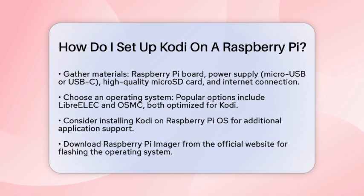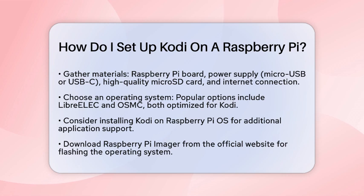First, gather your materials. You will need a Raspberry Pi board, a micro USB power supply that can provide up to 2500 milliamps, or for the Raspberry Pi 4, a 15-watt USB-C power supply. You will also need a high-quality microSD card with enough storage to hold the operating system and Kodi. Lastly, ensure you have an internet connection for downloading software.